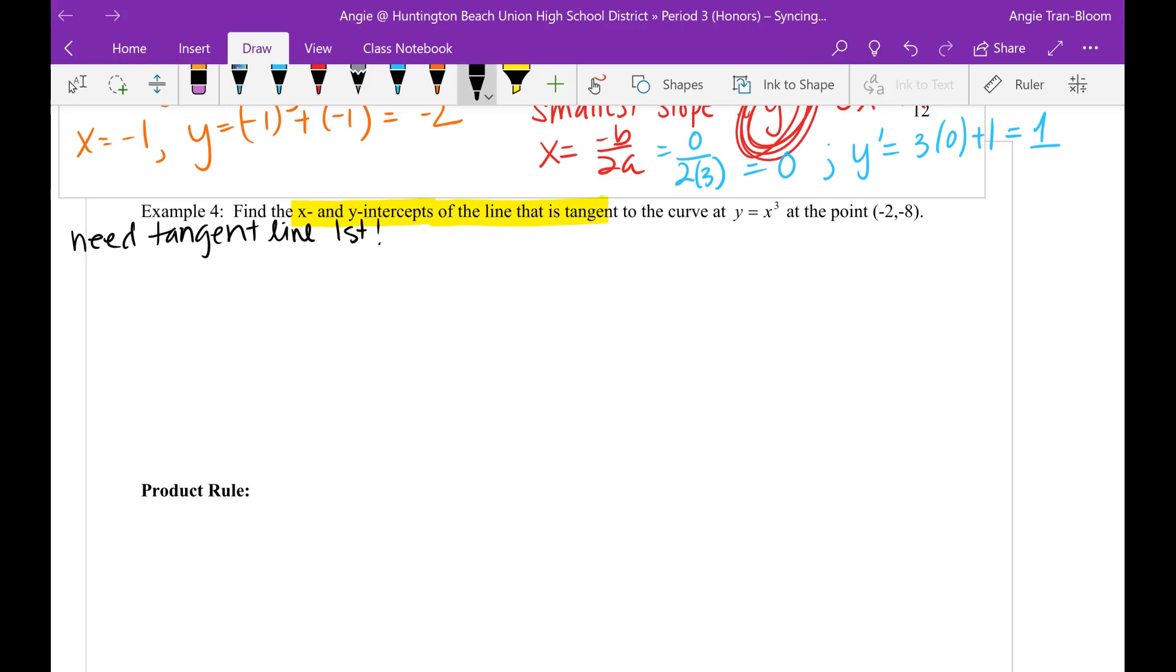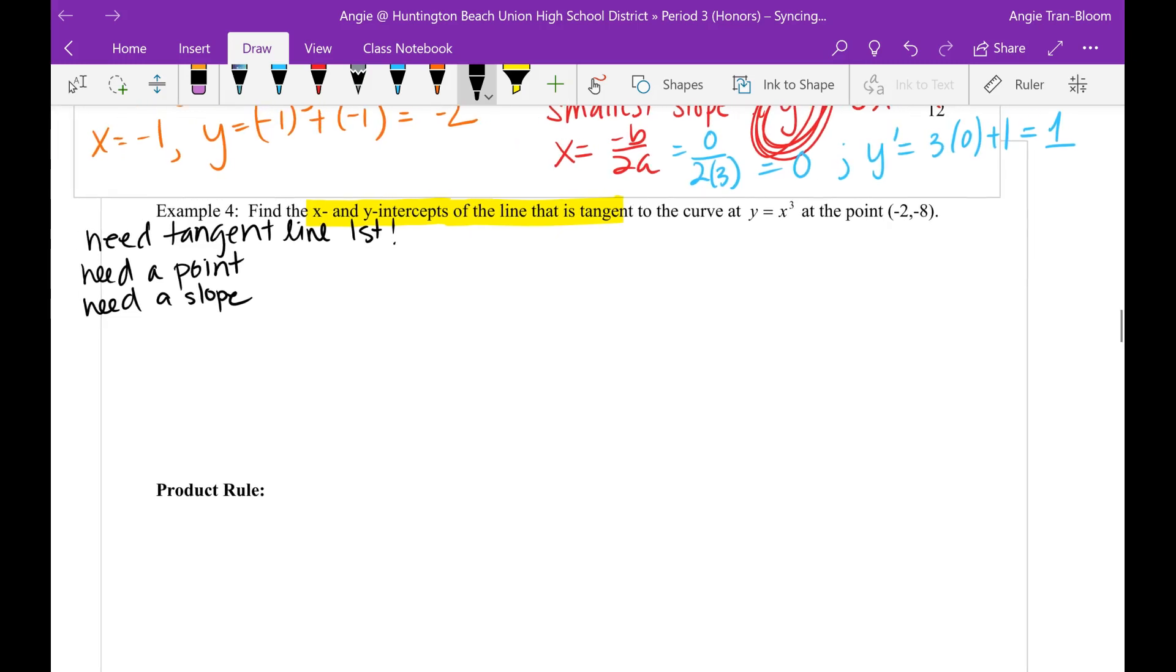To find the tangent line, I need a point and I need a slope. The point is known. The point is right here. Awesome. One less thing for me to find on my own.